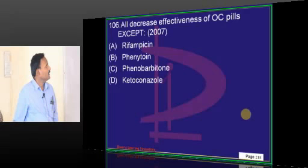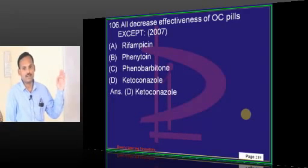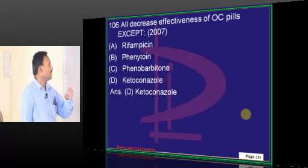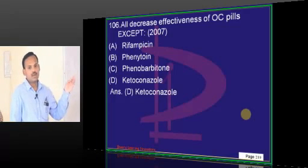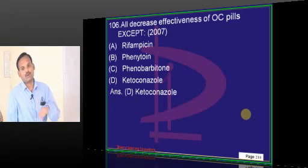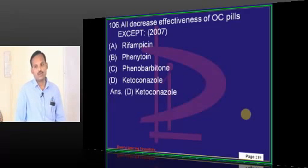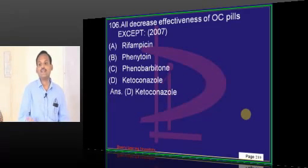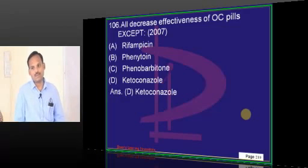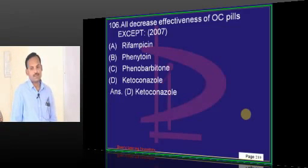All of the following decrease effectiveness of OC pills except: rifampicin decreases efficacy because it induces metabolism; phenytoin also induces metabolism; phenobarbitone also induces metabolism. Ketoconazole inhibits metabolism, so it will actually increase the levels of OC pills and cannot lead to failure of OC pills.